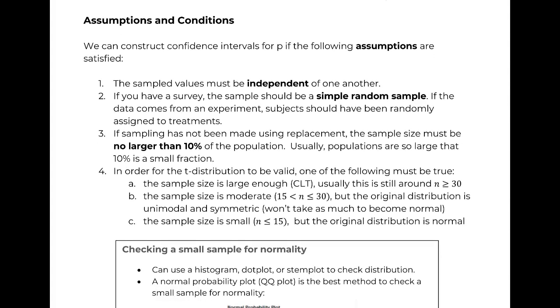Alright, so assumptions and conditions. We can construct confidence intervals for mu if the following assumptions are satisfied. The sample values, these are all the same, right? Independence, SRS, N no larger than 10%.